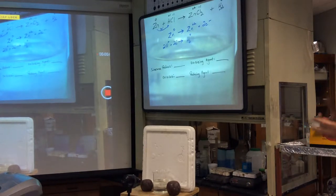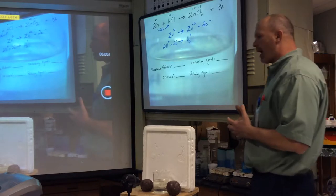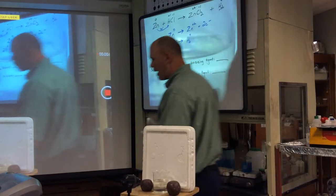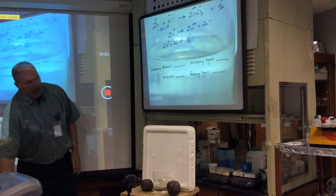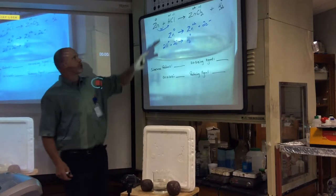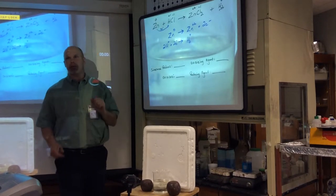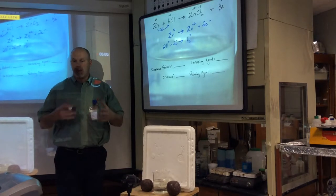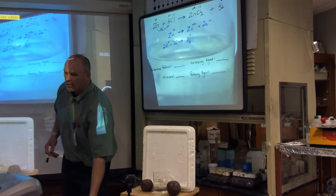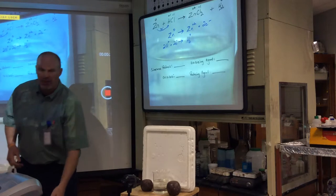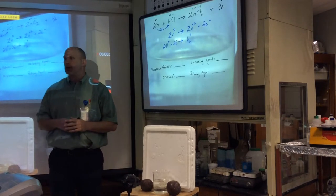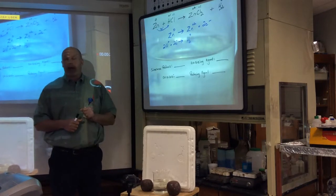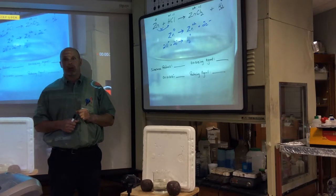Looking at redox reactions, we should understand that a redox reaction is nothing more than a reaction that shows a transfer of electrons. We've seen these before in making ionic compounds — nothing new. Some of these reactions we've seen a lot before. Single replacement reactions are classic examples of redox reactions, and we're going to learn to identify them today.